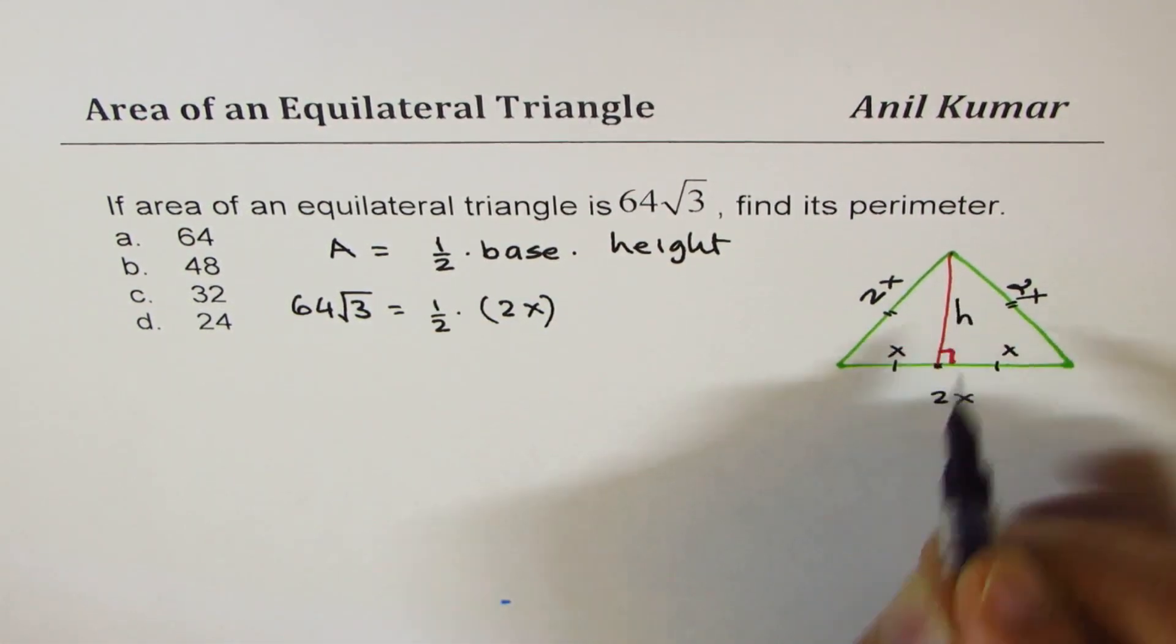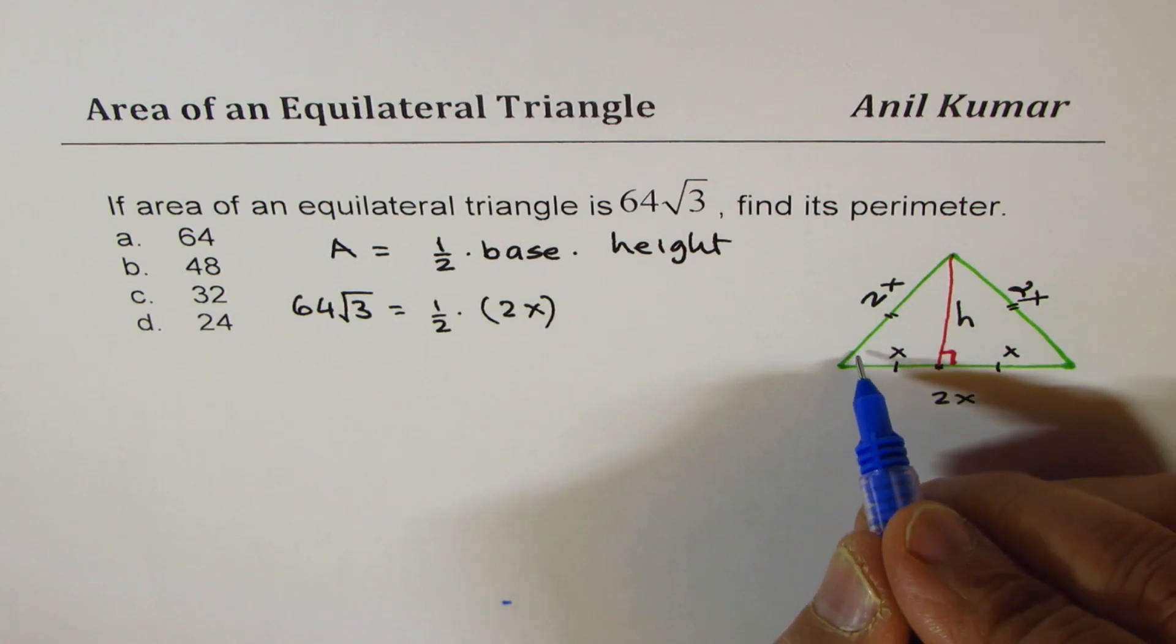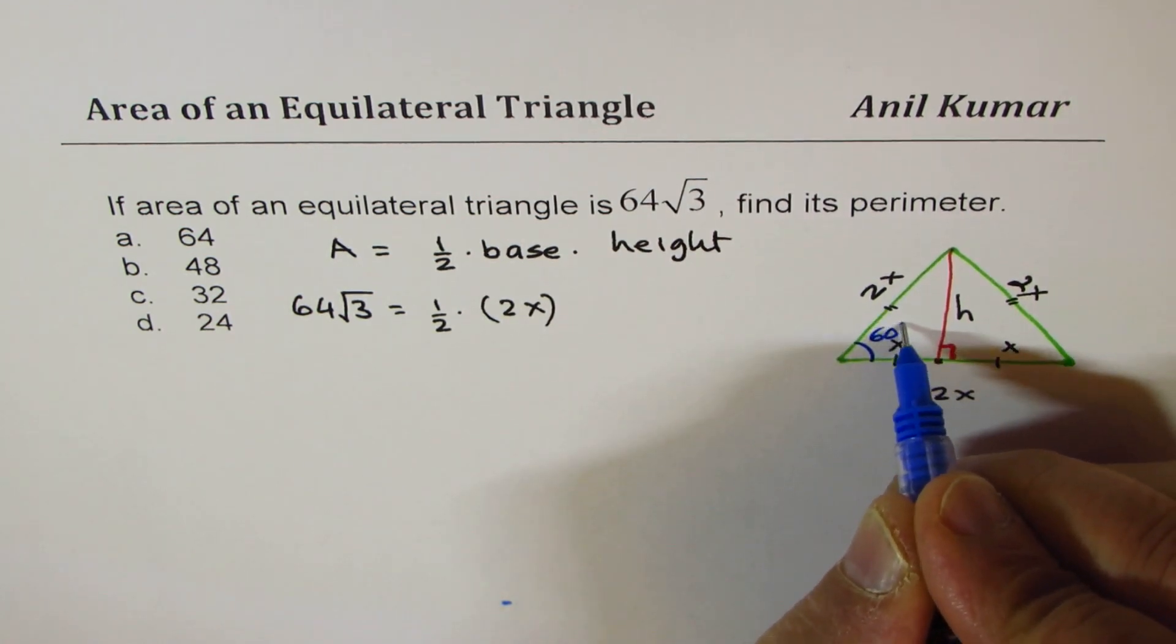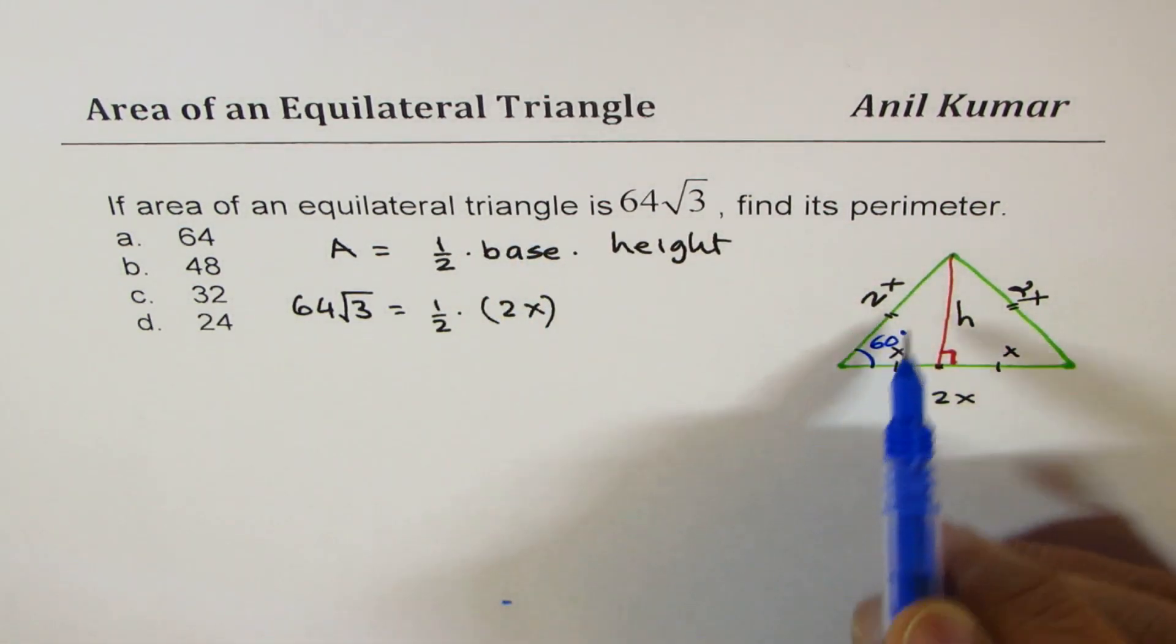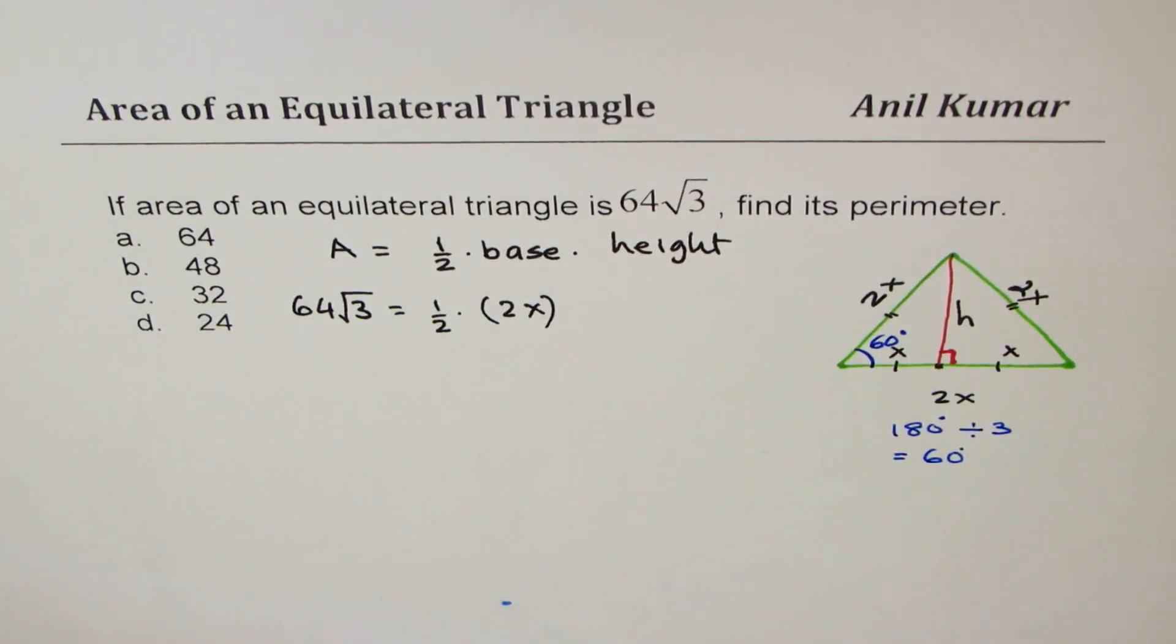Now what is the height? That is what we have to figure out. To find the height, we can take help of trigonometry. Each angle here is 60 degrees. Since equilateral triangle, all equal angles, 180 degrees divided by 3 gives us 60 degrees. So that's how you get 60 degrees.